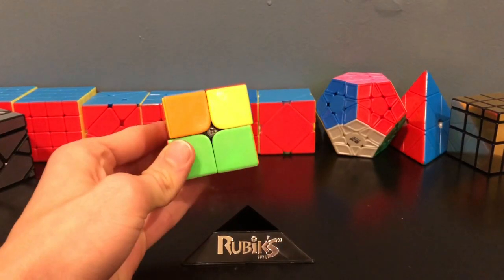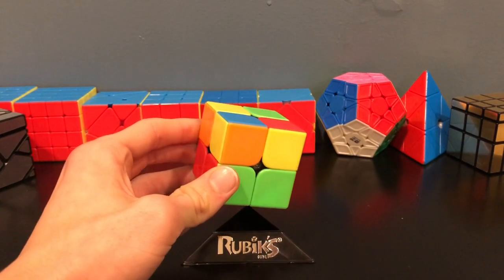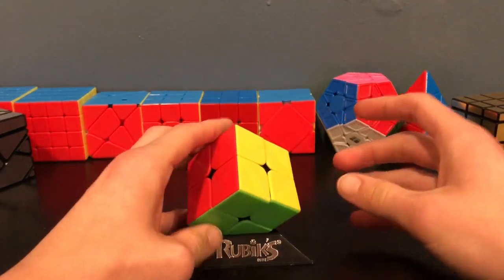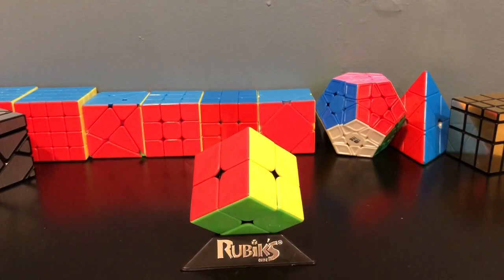There you go, that's how to solve the 2x2 with only using the T-PERM algorithm. What other algorithms could be used to solve the 2x2? If you have any ideas for future videos, leave those in the comments section. I hope this video is helpful to you, and for the future, good luck!